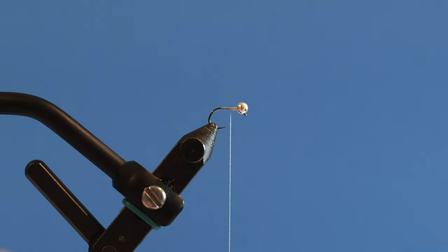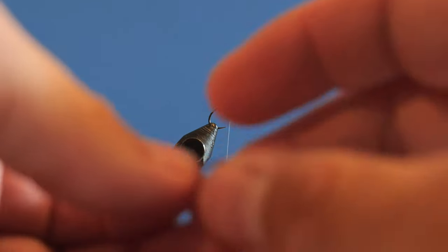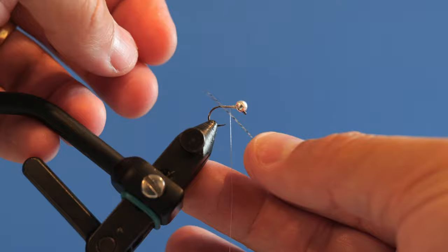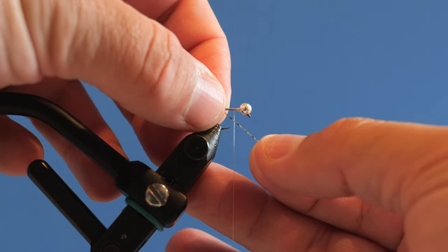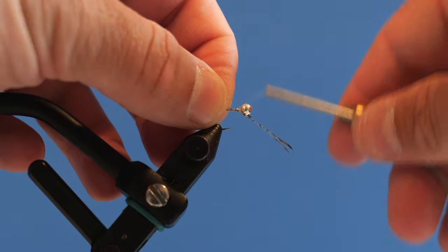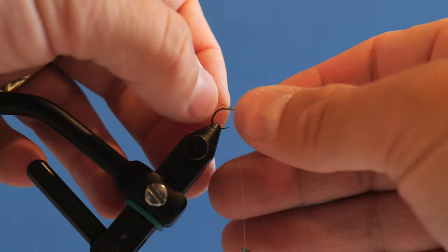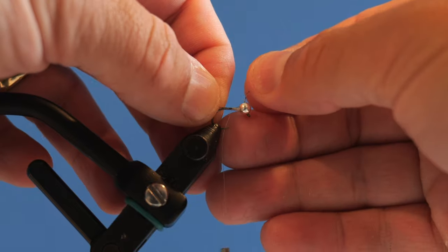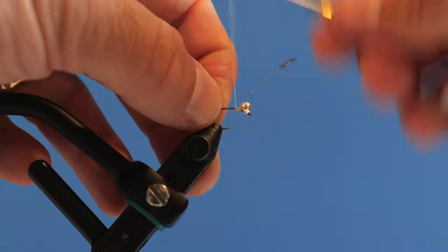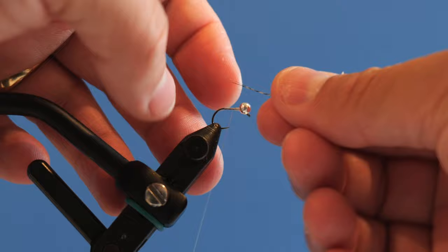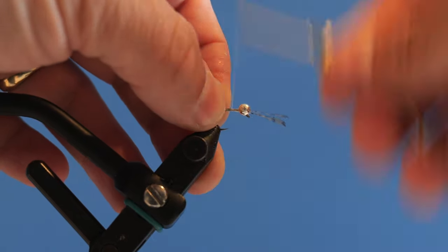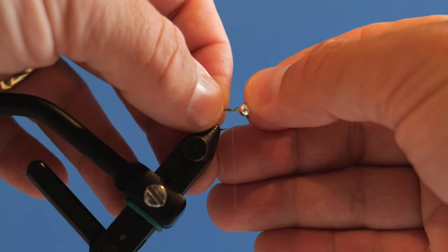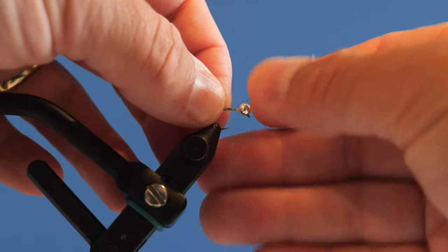I grab some of my coq de leon tailing fibers, I want about six to eight of those. Take those off, hold them up to the fly or the hook, and I want them to be about the length of the body or maybe just a little bit less. So I'll put those on and check to make sure. That's not good, start that again.